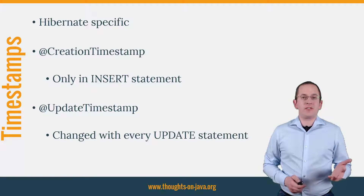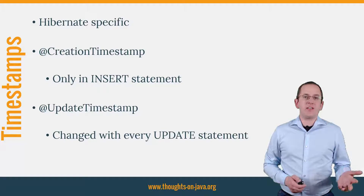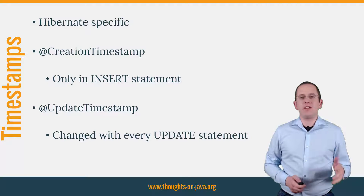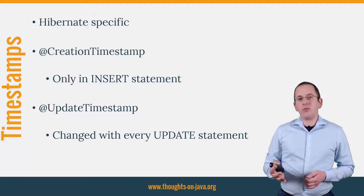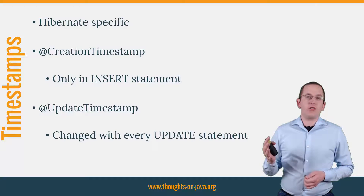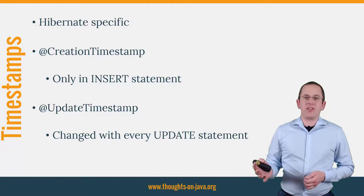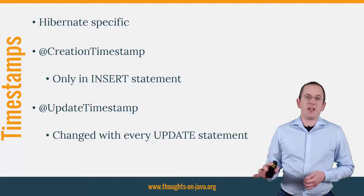When a new entity gets persisted, Hibernate gets the current timestamp from the JVM and sets it as the value of the attribute annotated with @CreationTimestamp. After that, Hibernate will not change the value of this attribute. The value of the attribute annotated with @UpdateTimestamp gets changed in a similar way with every SQL update statement — Hibernate gets the current timestamp from the JVM and sets it as the update timestamp on the SQL update statement.